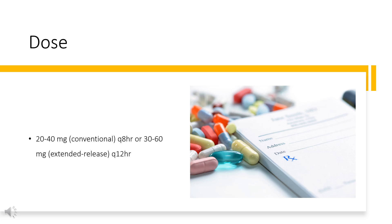Chronic stable angina: 20–40 mg conventional oral formulation every 8 hours. Start at 20 mg and allow 3 days between dose increases to achieve steady-state plasma drug concentration. Usual dosage range is 60–120 mg per day.